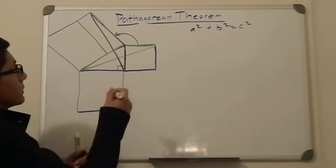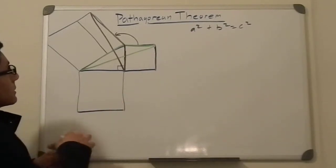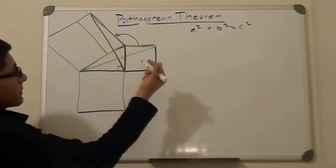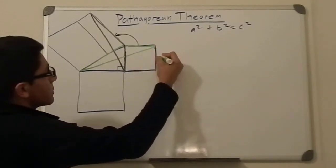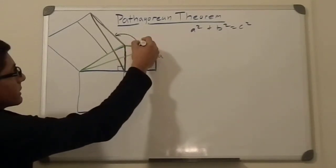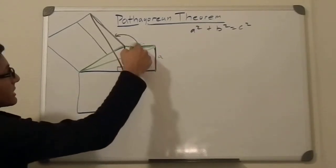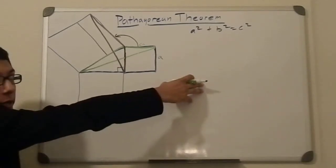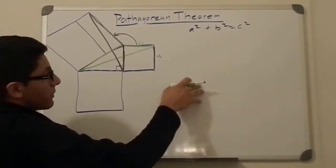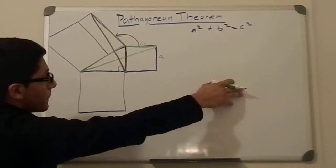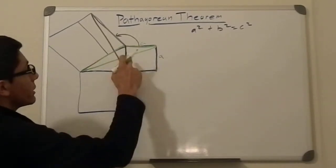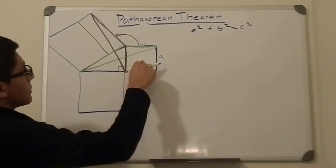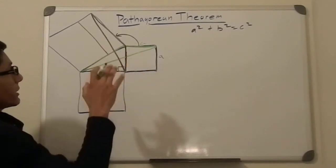Now, the green triangle shares this side with square A — so this side here has length A. It also shares this height. Because of the theorem we established, we can conclude that this green triangle has half the area of square A.